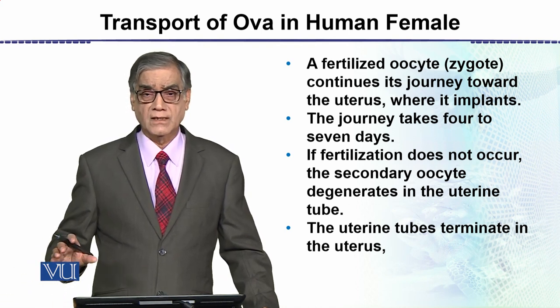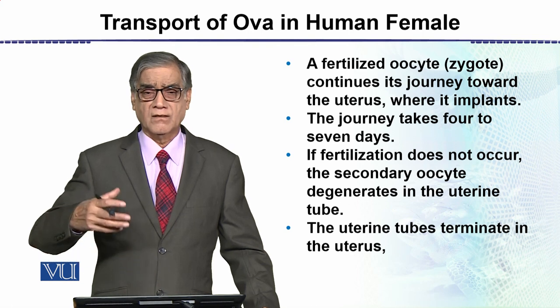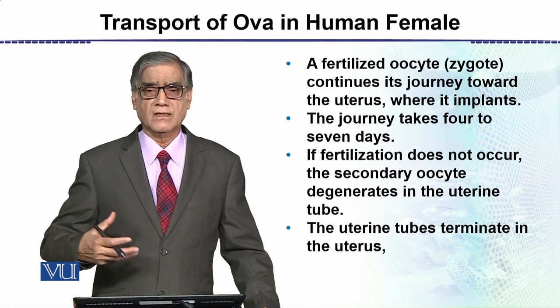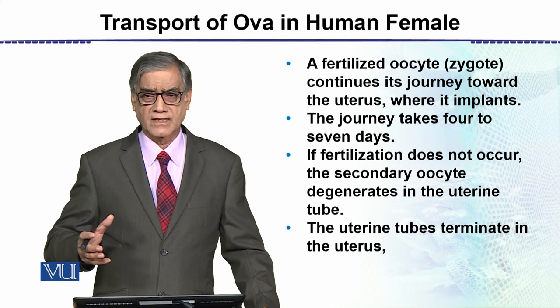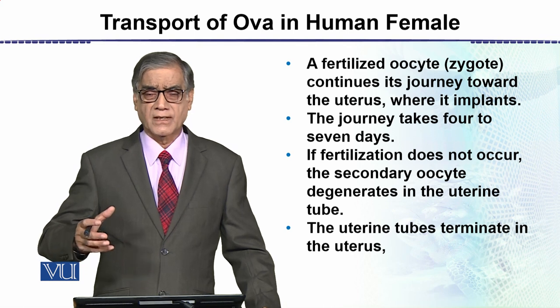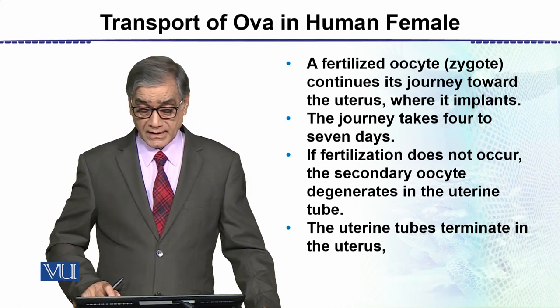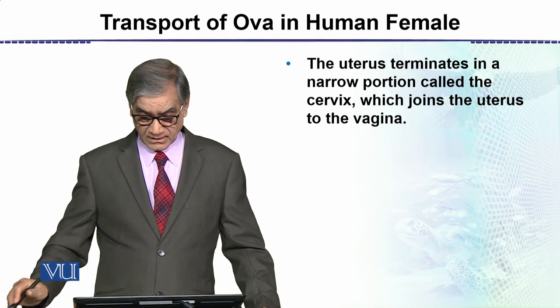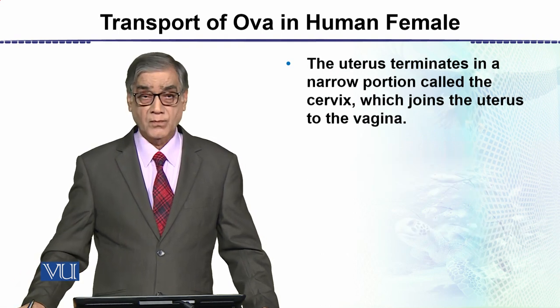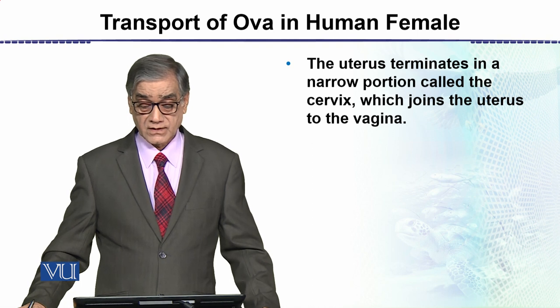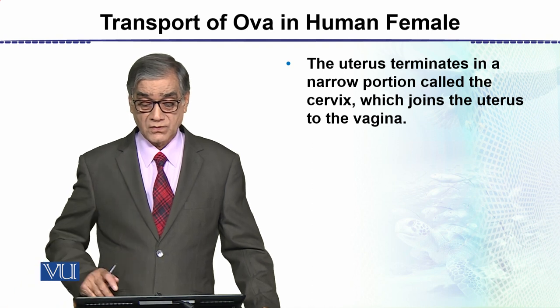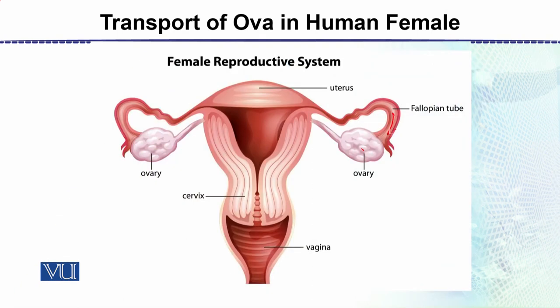If fertilization does not occur, the secondary oocyte degenerates inside the uterine tube or disintegrates inside the uterus, or it comes out. The uterine tubes terminate in the uterus; the uterus terminates in a narrow portion called the cervix, which joins the uterus to the vagina.